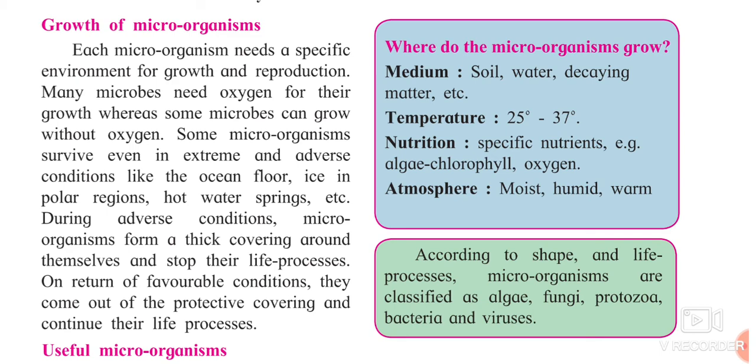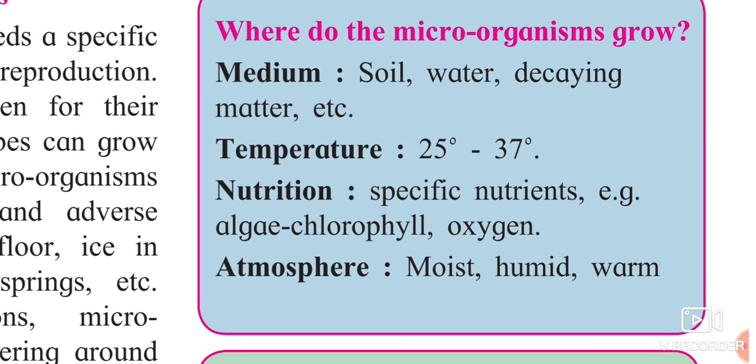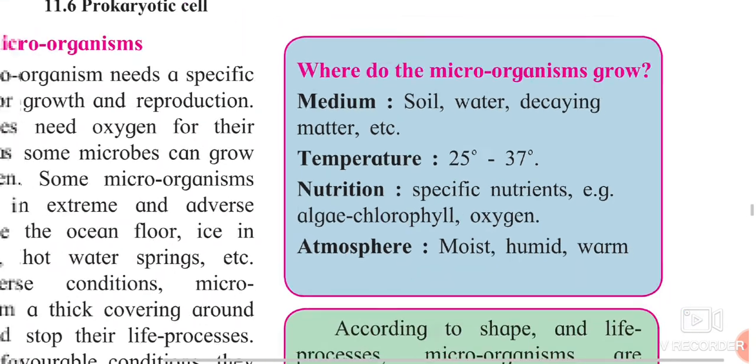The mediums of spreading of microorganisms include soil, water, and decaying matter — any decaying thing will easily have microorganisms. The temperature required for microorganism growth is 25 to 37 degrees. Specific nutrition is required — for example, algae need chlorophyll or oxygen. The atmosphere should be moist, humid, and warm.